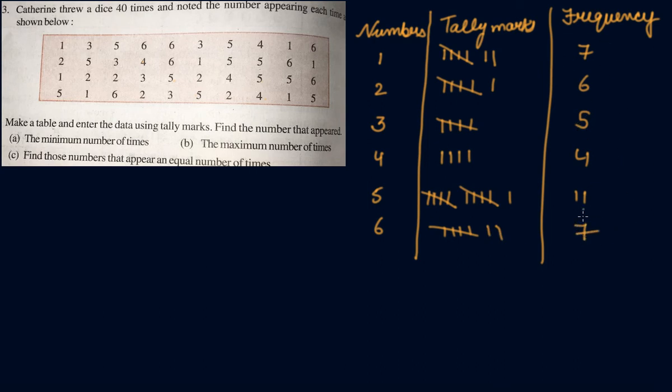So in total we will calculate, this would be 40 because he has thrown the dice 40 times. Now let's answer the question number A: find the number that appeared the minimum number of times. Which number appeared least? The number is four. Four has appeared only four times. So the number is four. B: the maximum number of times. Which number has appeared maximum number of times? Five. It has come maximum number of times, that is eleven times. Five. Find those numbers that appear an equal number of times. See, one and six have appeared equal number of times, that is seven and seven. So one and six. So this is how you do the organization of data.